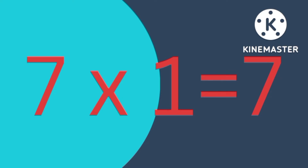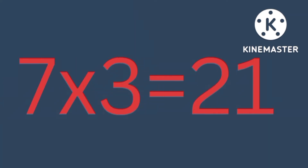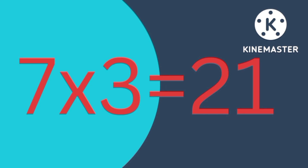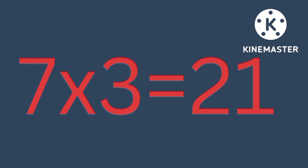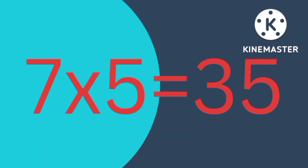7×1 is 7. 7×2 is 14. 7×3 is 21. 7×4 is 28. 7×5 is 35.